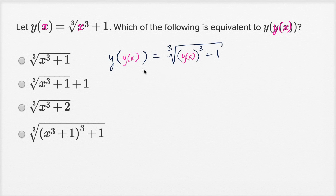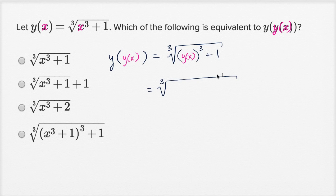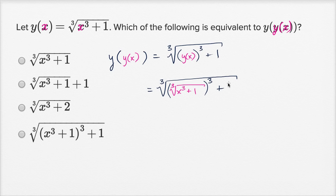So what's y of x equal to? It's equal to all of this. So this is going to be equal to the cube root of — let me give myself some space — y of x is the cube root of x to the third plus one. Now we're going to raise that to the third power plus one.